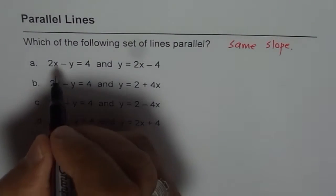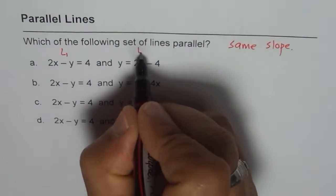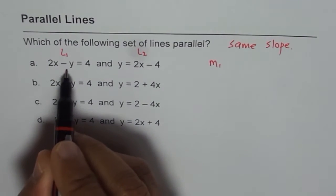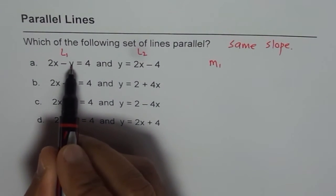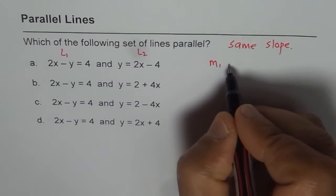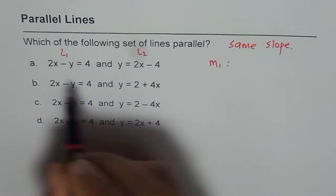Now what is the slope of first line? Let us say this is line 1, this is set of line 2. So m1 for us really is how much? If I take y on this side I get slope of 2. So I can write this equation.